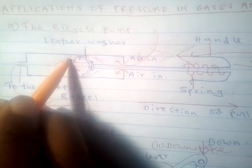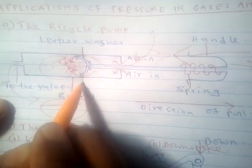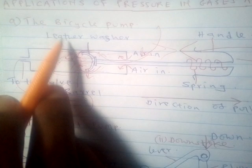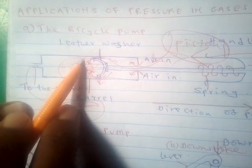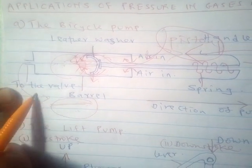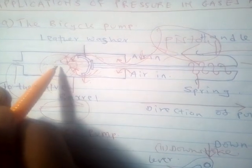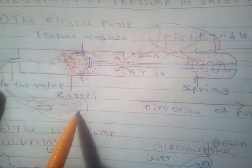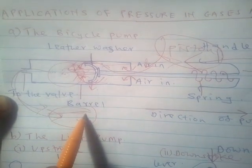Because of the high pressure of the air below the leather washer, that pressure causes the leather washer to press against the walls of the barrel — so it acts as a piston to prevent air from escaping the barrel. Because of this compressed, high-pressure air, it forces the valve of the bicycle tire to open. When that valve opens, the compressed air forces its way into the bicycle tire, since its pressure is now higher than the pressure inside the tire.